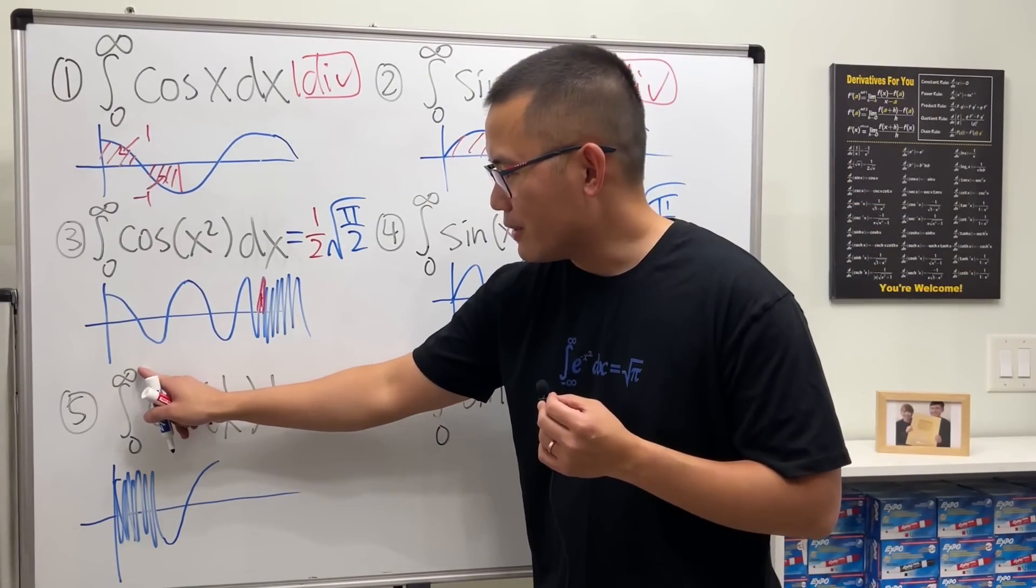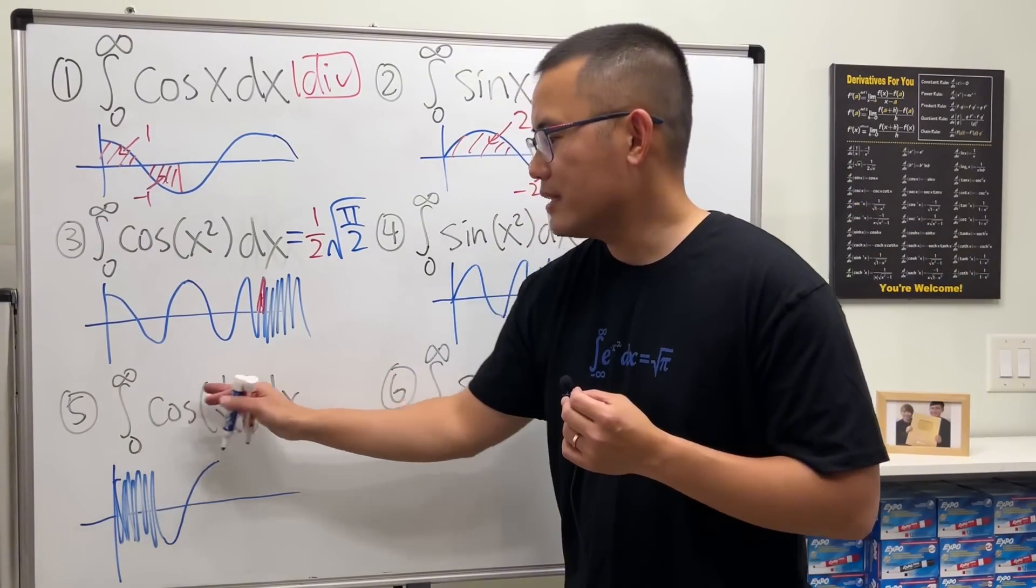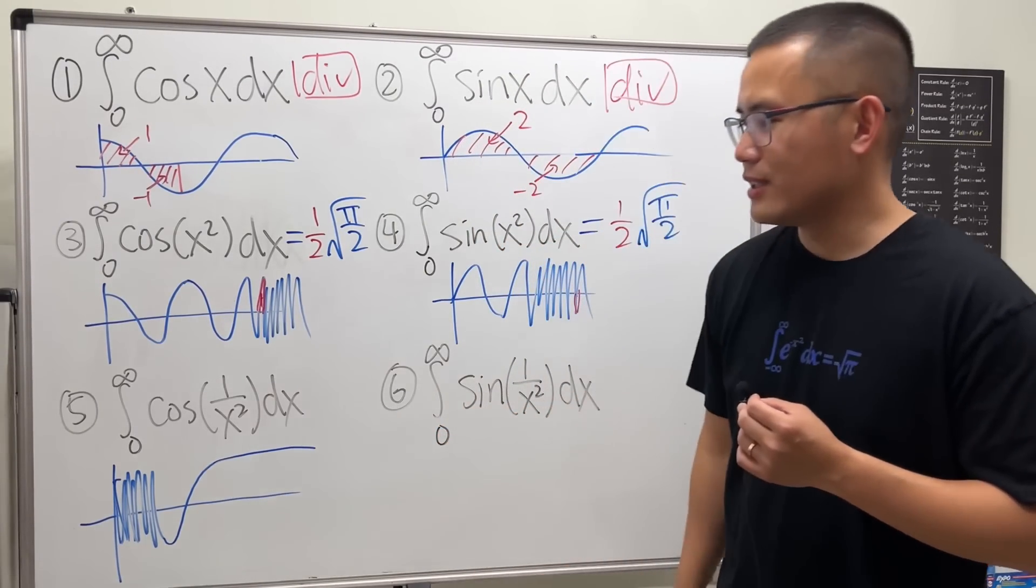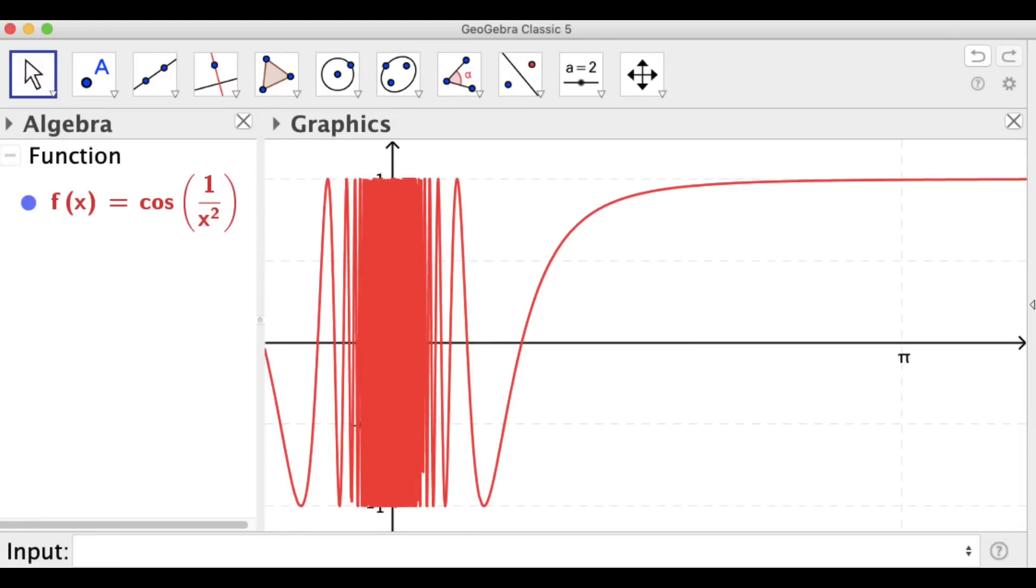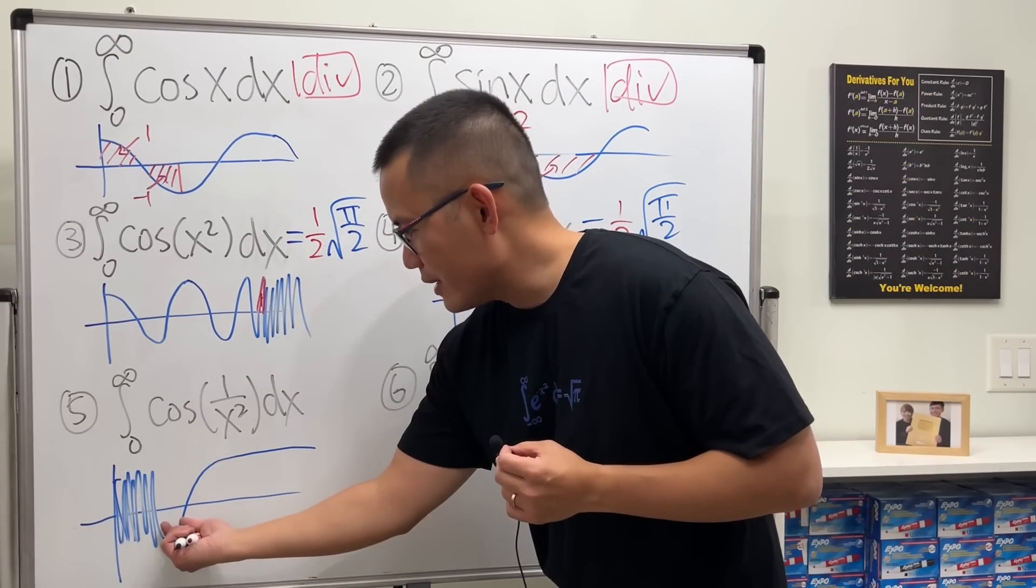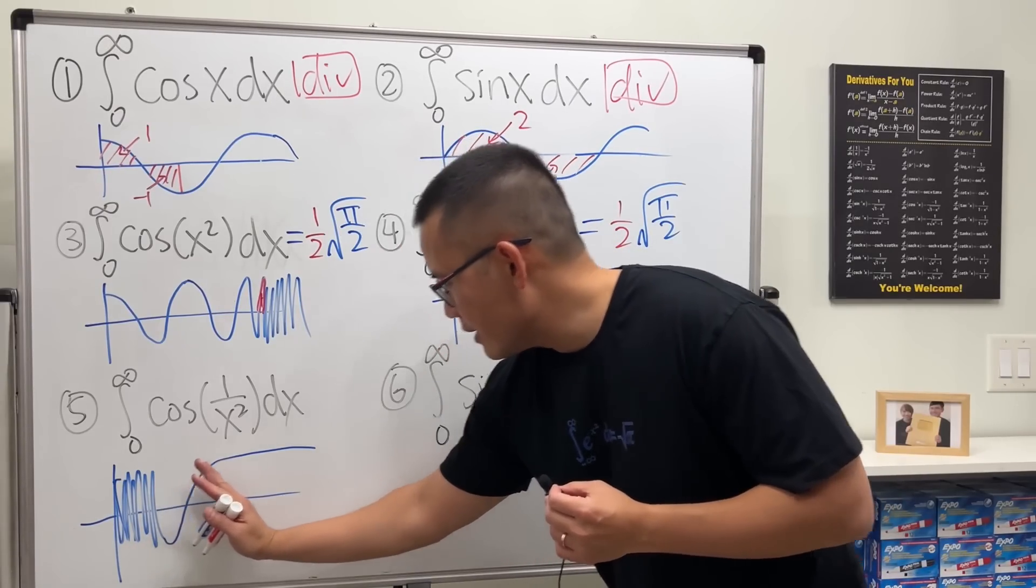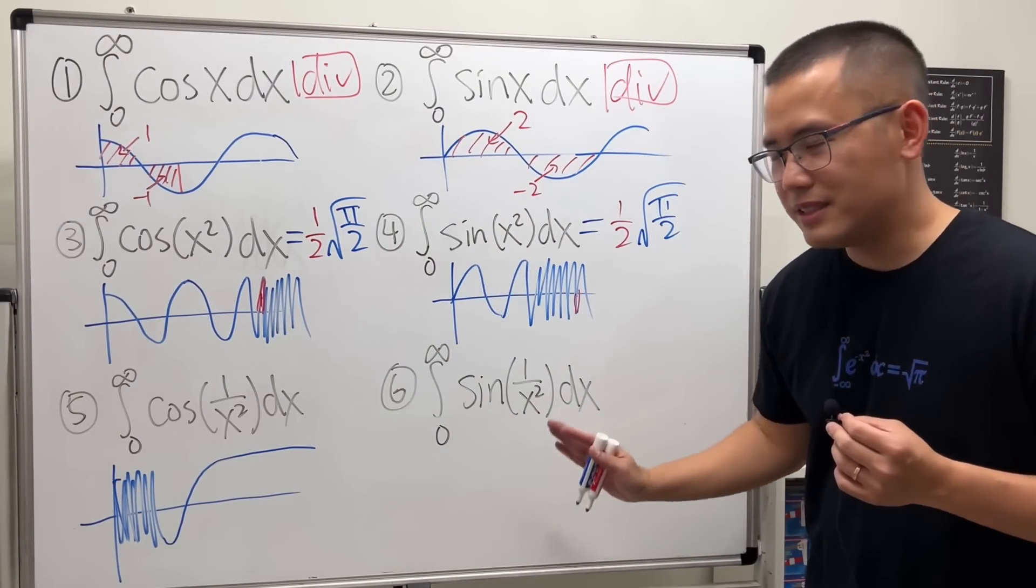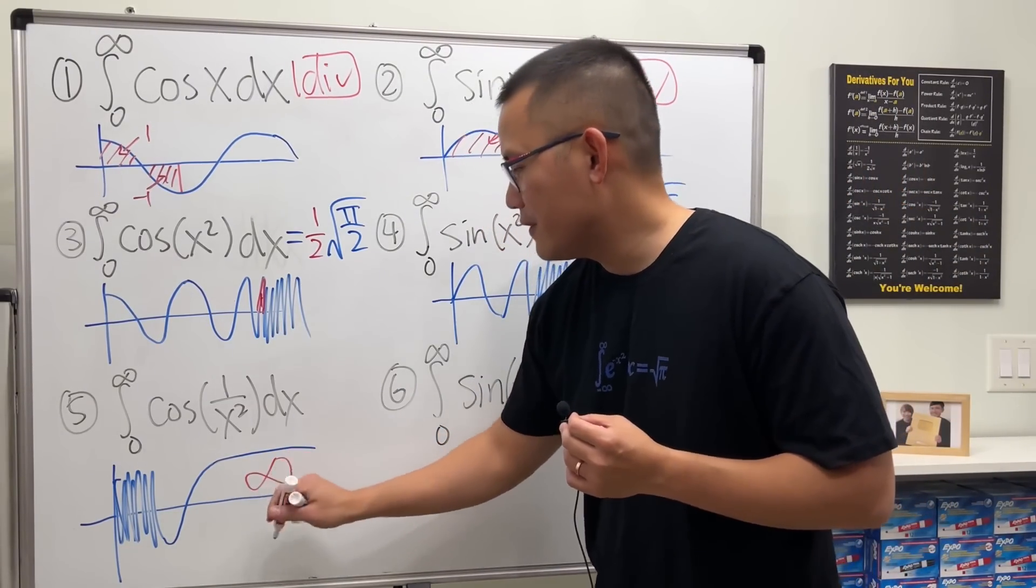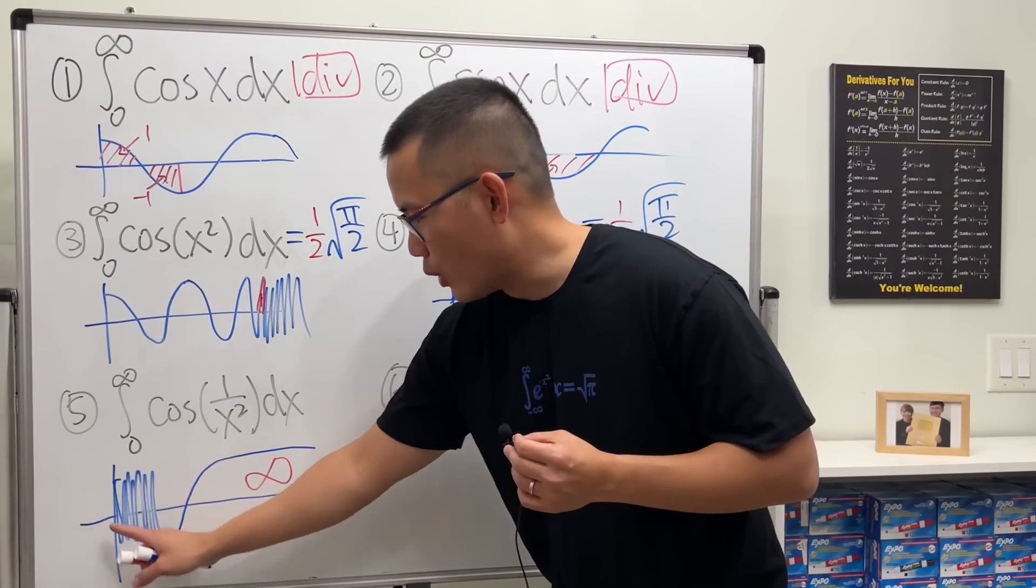Then, as x getting to infinity, 1 over infinity squared is going to be 0. Cosine 0 is 1. So we will have a horizontal asymptote like that. Now, guess what? I really don't know what's happening right here. But this right here is a pretty small region. But if you go from this point and on, you can see that this right here is going to be bigger and bigger. You will have infinite area.